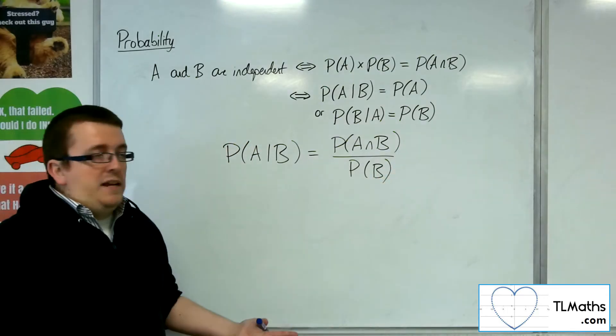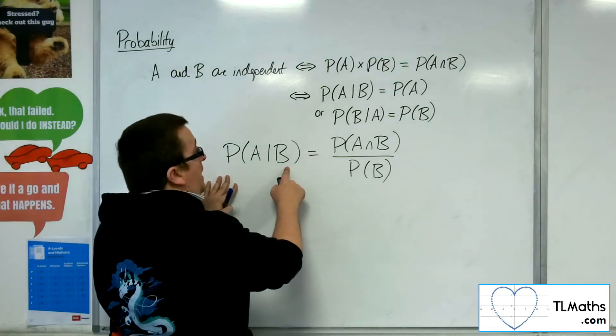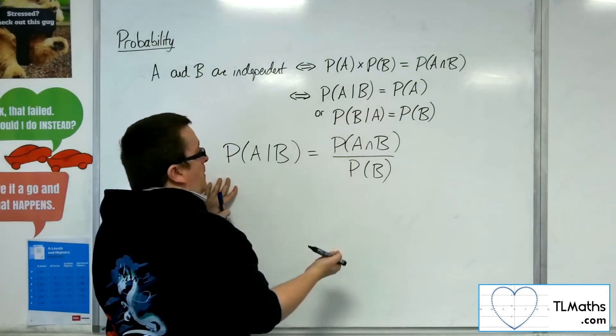Now, if A and B are independent, then the probability of A given B is the same as the probability of A.